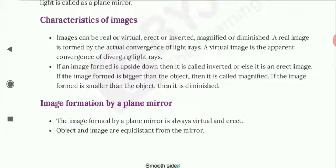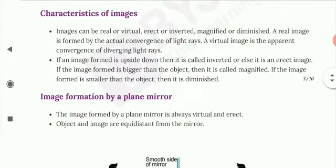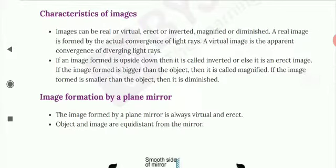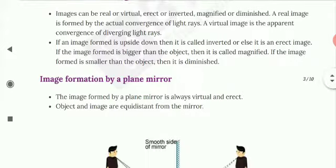Image formation by a plane mirror: the image formed by a plane mirror is always virtual and erect because we can't touch the image. It's formed behind a mirror, so it is virtual. Object and image are equidistant from the mirror. You can see the picture below.